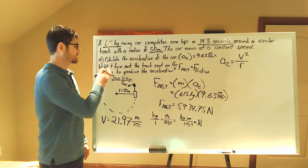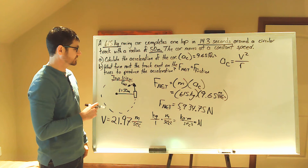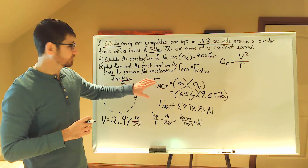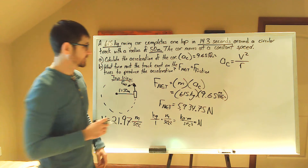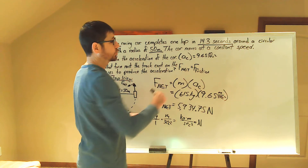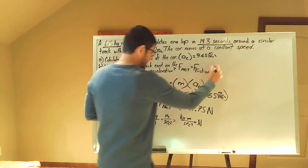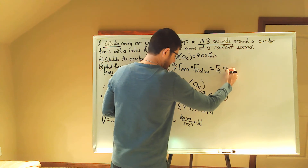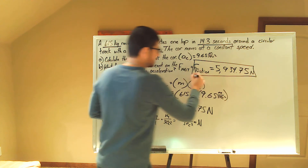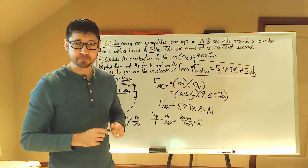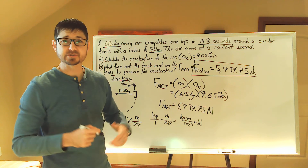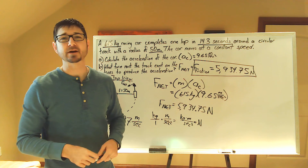The question asks what force must the track exert on the tires to produce the acceleration. This is the net force, but the agent of force is the force due to friction between the tires and the track. The force of friction is equal to 5,934.75 newtons — and that is the answer to part B. I hope this helps you, and if you have any questions just give me a call or send me an email. I hope you have a wonderful day.